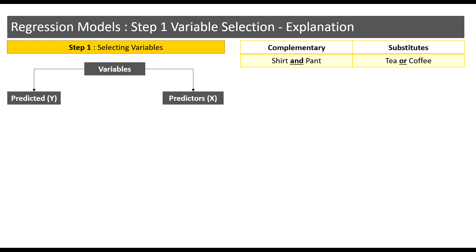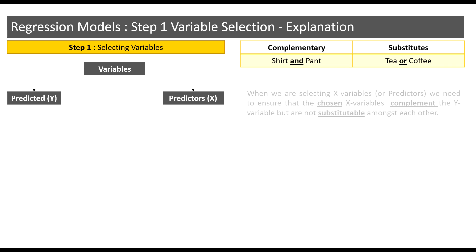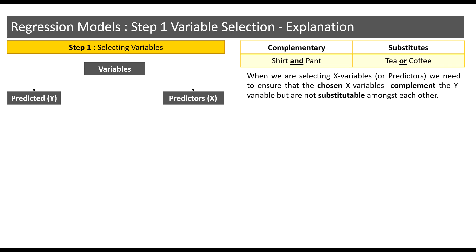So what is the application of complementary and substitutes when it comes to variable selection? When we are selecting X variables to predict a particular Y variable, we need to ensure that the selected X variables complement the Y variable but are not substitutable amongst each other.